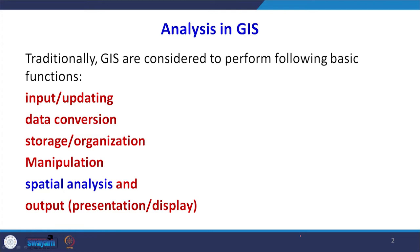When we talk about analysis in GIS, we basically carry out traditionally several tasks. These include data input, updating the maps, data compilation, data conversion, data interpolation, data storage and organization. Then we carry out manipulation of the data and spatial analysis, which is the next very important step in GIS. Finally, the output presentation — once we derive the results, we can represent the output in graphical, pictorial or digital form.